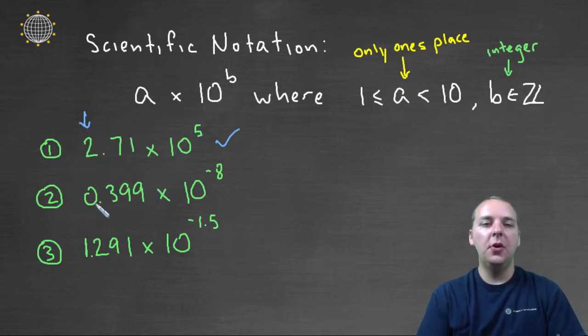Now 0.399 times 10 to the negative 8, I don't think that's going to be in scientific notation. The negative 8 is an integer, that's fine, but the 0.399 is not between 1 and 10. 2.71 is between 1 and 10, but 0.399 is not. It doesn't even have a ones place.